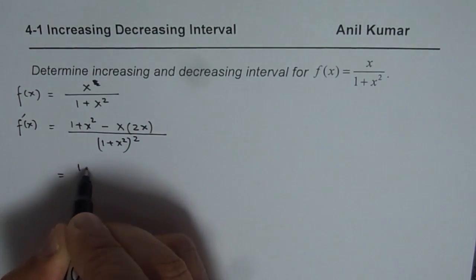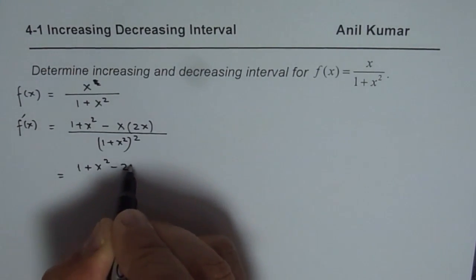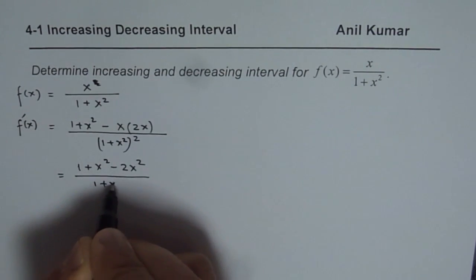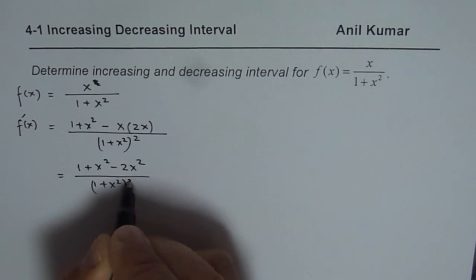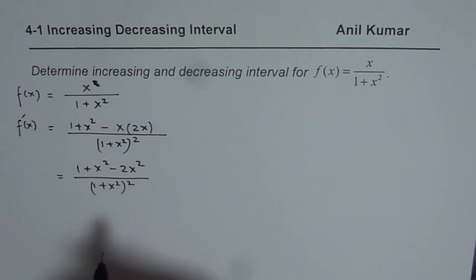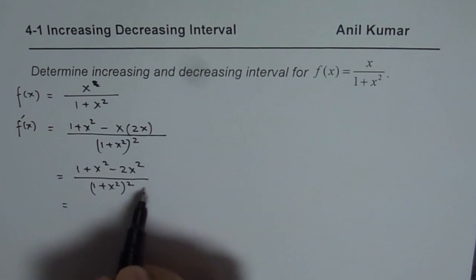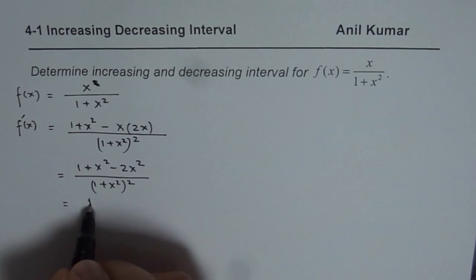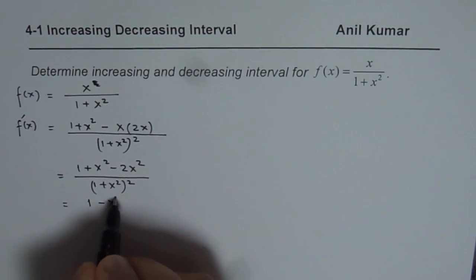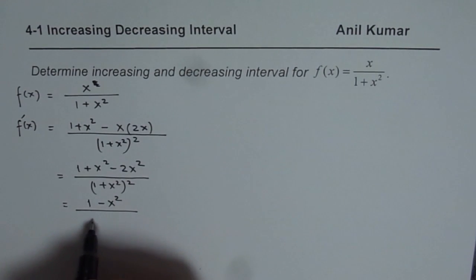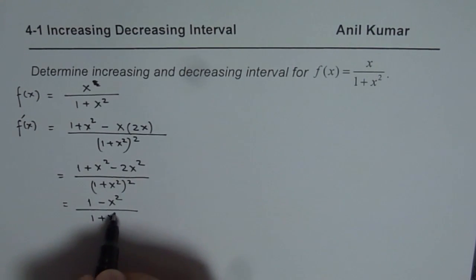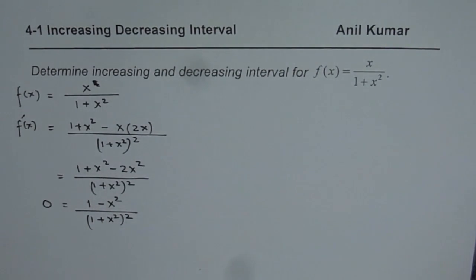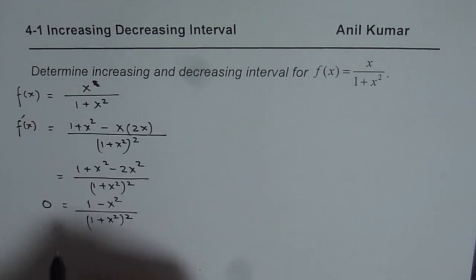Simplifying, we get (1 + x² − 2x²) / (1 + x²)². For the critical numbers, we equate this derivative to 0. Further simplifying the numerator gives us (1 − x²) / (1 + x²)², and we set this derivative equal to 0.